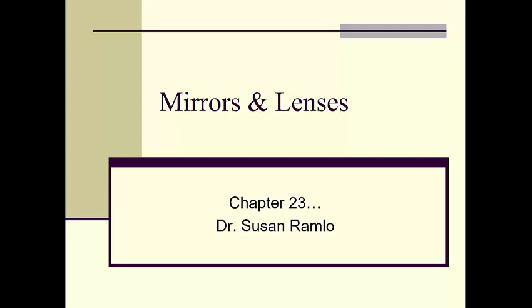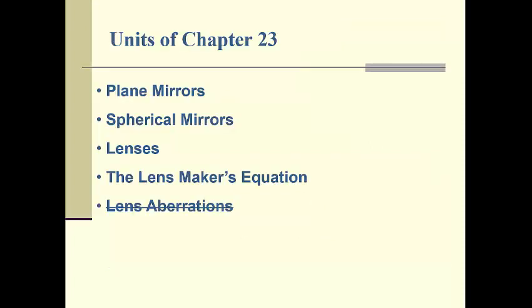This is a presentation about mirrors and lenses, fitting for an introductory level physics class, made specifically for a Physics for Life Sciences II class using Bolson and Buffa College Physics. This is Chapter 23, and we're going to cover all of the topics in Chapter 23 except for lens aberrations.